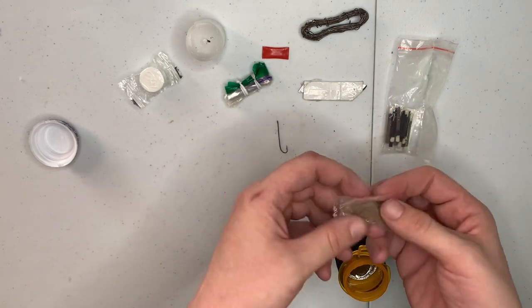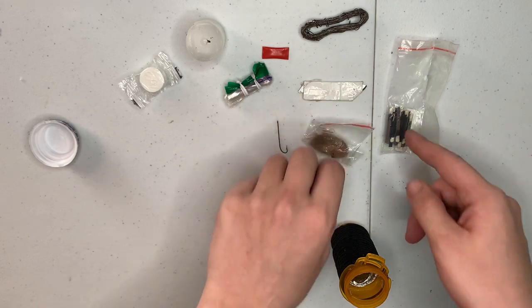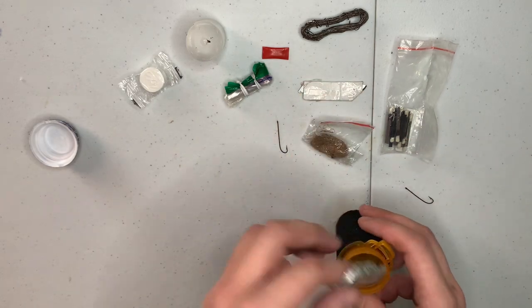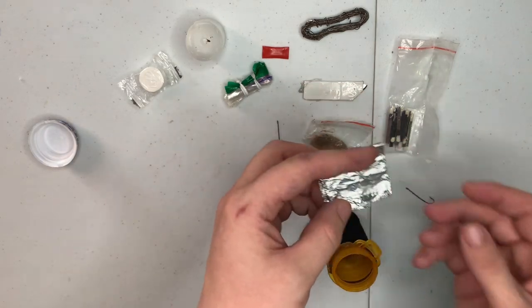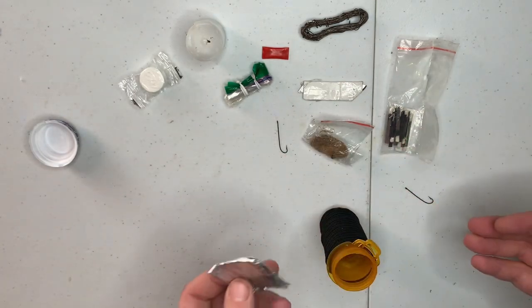Here we have some tinder. This will give you a head start because you already have kind of crappier matches. Then you have your tin foil which can be used to cook your fish if you catch any or whatever you do catch.